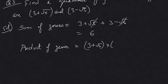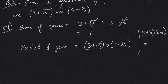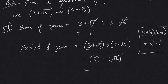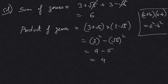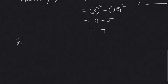Now for the product of zeros: (3 + √5)(3 − √5). This uses the algebraic identity from Class 9 — the difference of squares identity: (a + b)(a − b) = a² − b². So it becomes 3² − (√5)² = 9 − 5 = 4. So we have sum of zeros = 6 and product of zeros = 4.